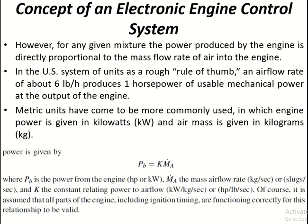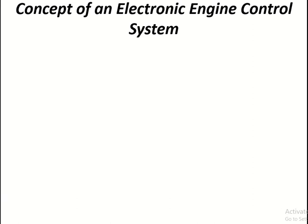The power formula is given as Pb = k × ma, where k is the constant relating power to air flow and ma is the mass air flow rate. Of course, it is assumed that all parts of the engine, including ignition timing, are functioning correctly for this relationship to be valid. In the upcoming lecture, we will continue further with the electronic engine control system.